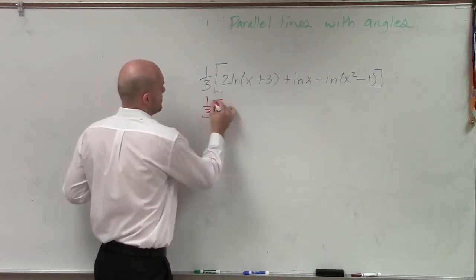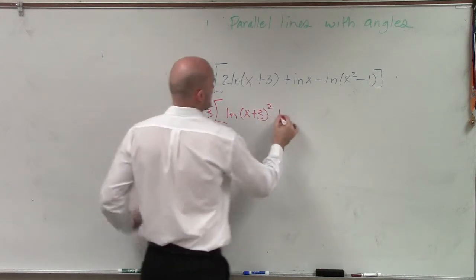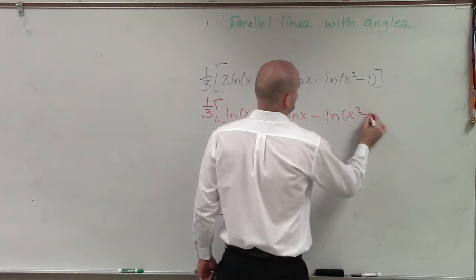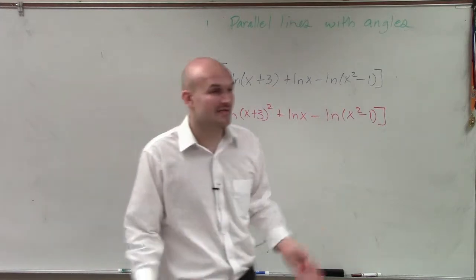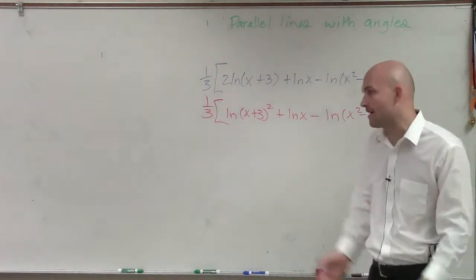So I'll just do one-third times ln of (x plus 3) squared, plus ln of x, minus ln of (x squared minus 1). So all I did was I brought the 2 up. I know that has to happen. Then I'm just going to work from left to right inside the parentheses, following order of operations.